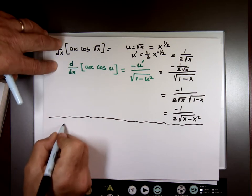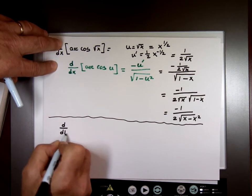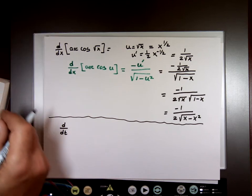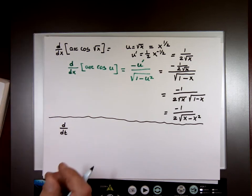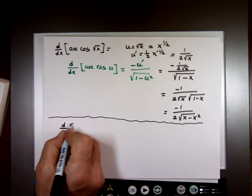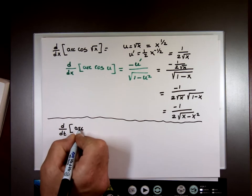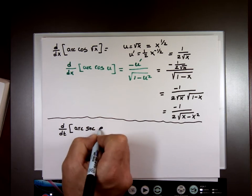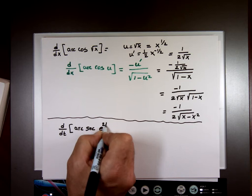What's the derivative, dx we'll use, instead of dt, I can make it dt, of arc secant e to the 2t. Instead of x, we're using t.